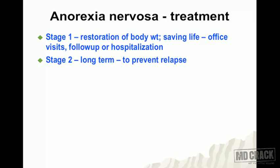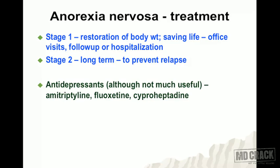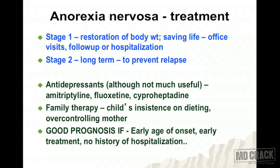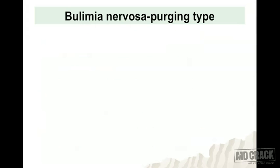Management of anorexia nervosa is divided into two stages. Stage one is to restore body weight to save the patient's life — this may involve office visits for follow-up or hospitalization. Stage two is long-term management to prevent relapse. Medications include antidepressants such as amitriptyline, fluoxetine, and cyproheptadine, though they are not very useful. Family therapy addresses the child's insistence on dieting and the over-controlling mother. Prognosis is good with early age of onset, early treatment, and no history of hospitalization.